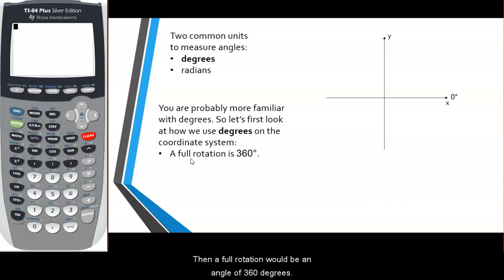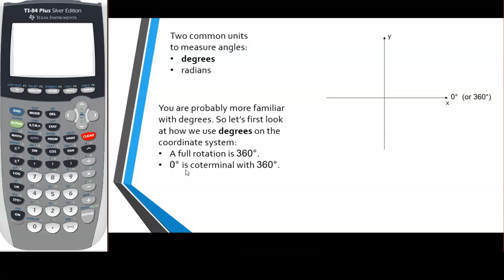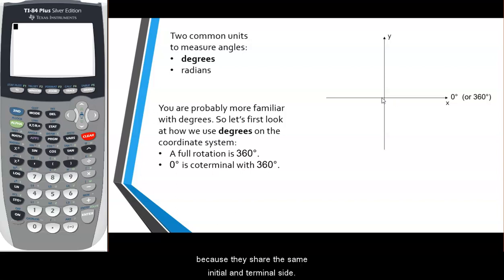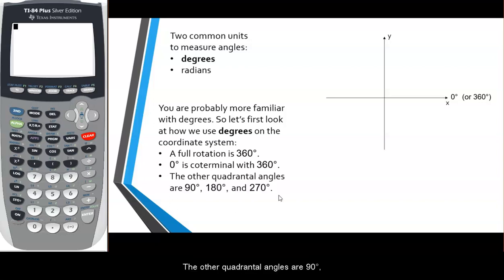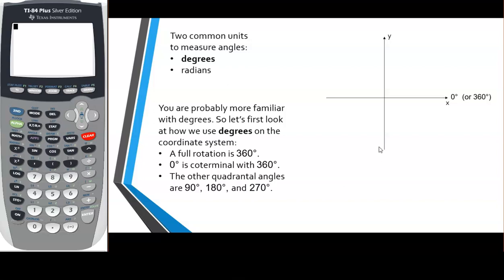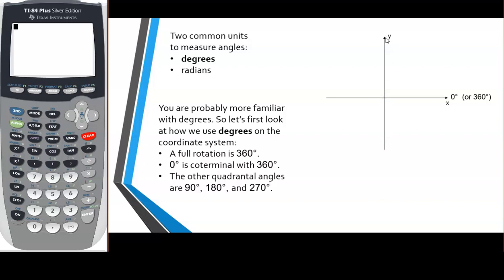A full rotation would be an angle of 360 degrees. So zero degrees is coterminal with 360 degrees because they share the same initial and terminal side. The other quadrantal angles are 90 degrees, 180 degrees, and 270 degrees. We call them quadrantal angles because their terminal side happens to fall on one of the axes — the x-axis or the y-axis.